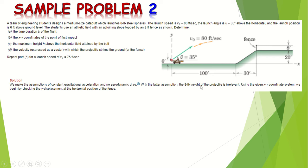Using the given x-y coordinate system, we begin by checking the y-displacement at the horizontal position of the fence. This is the horizontal position of the fence, indicated in the illustration.